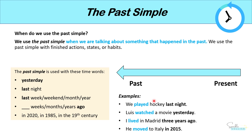So let's look at some examples. We played hockey last night. Luis watched a movie yesterday. I lived in Madrid three years ago. He moved to Italy in 2015. In all of these sentences, we are talking about something that happened in the past and not in the present.